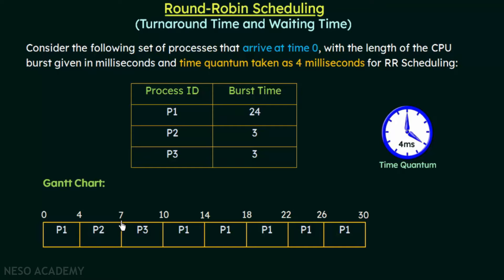At 7 milliseconds the CPU is assigned to the next process, which is P3. P3 gets the CPU at 7 milliseconds and has to execute for 3 milliseconds. Its burst time is also less than the time quantum of 4 milliseconds. So P3 executes from 7 to 10 milliseconds and also voluntarily releases the CPU. At the 10th millisecond P3 finishes execution. However, P1 only executed for 4 milliseconds and still has 20 milliseconds remaining.